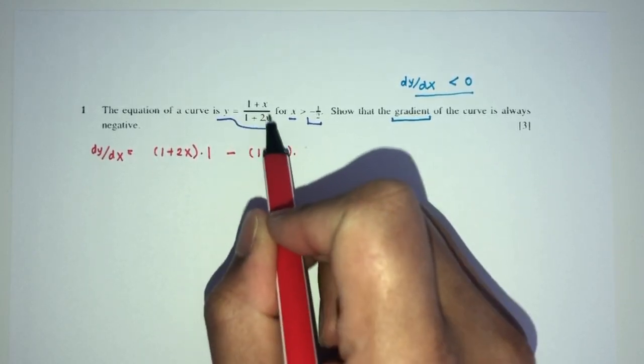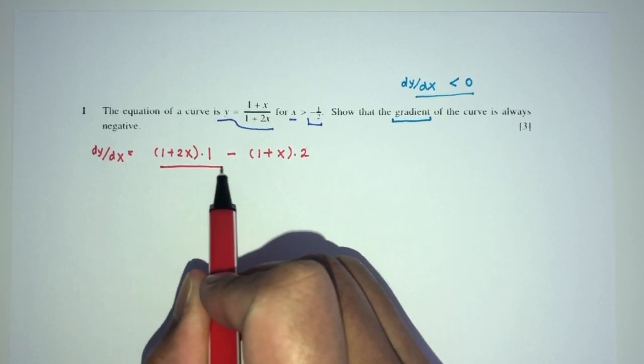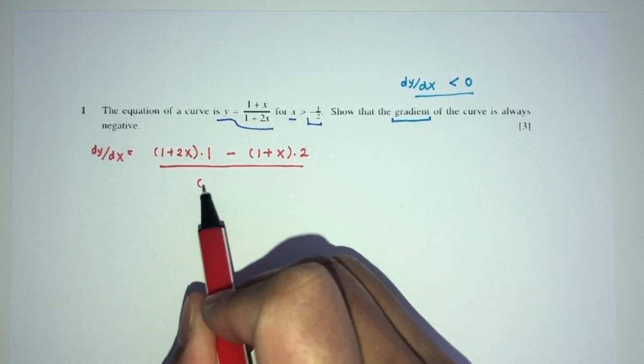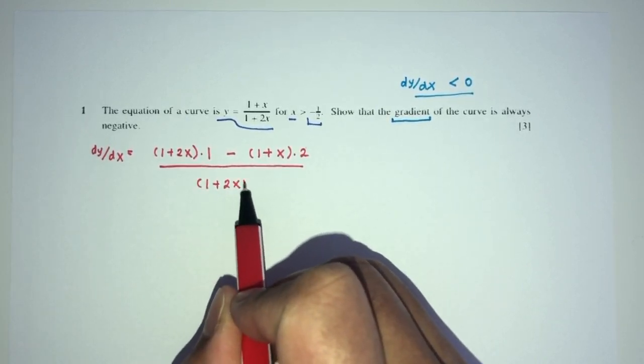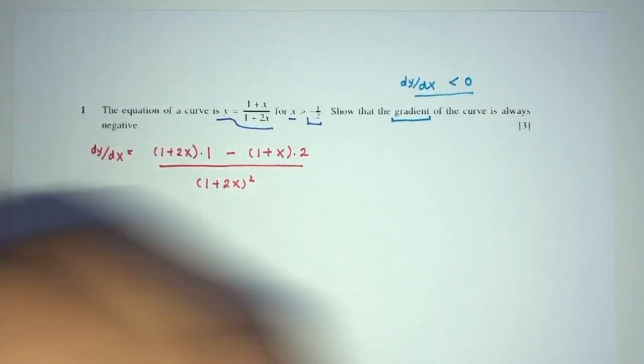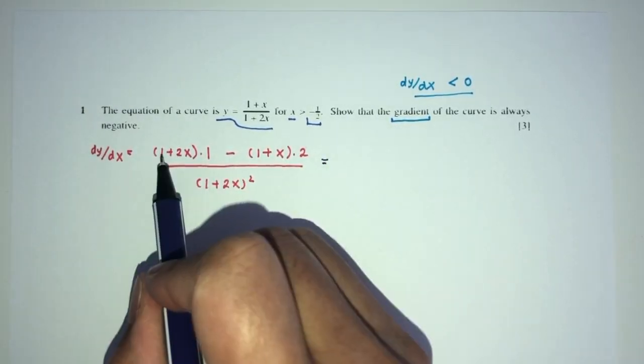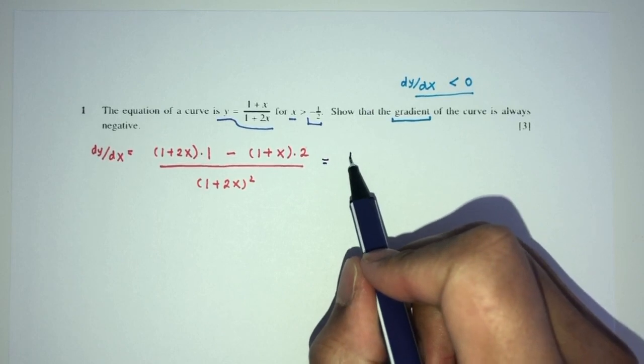multiply by d by dx of this one, that should be 2, then the whole thing, divide by the base square, you will have 1 plus 2x square. Now, simplify, let's see what happens. Times 1 will be the same thing, 1 plus 2x.